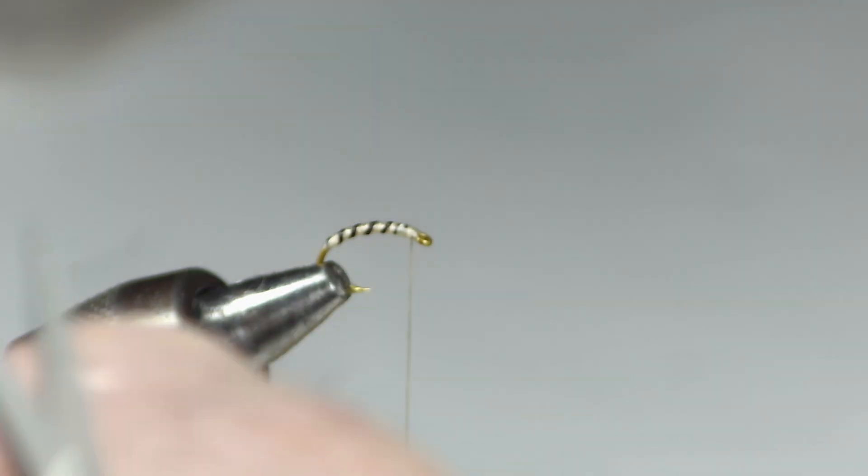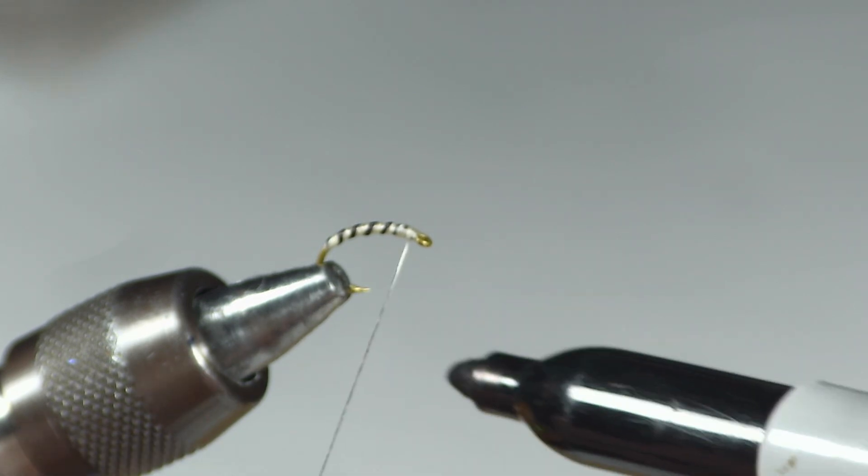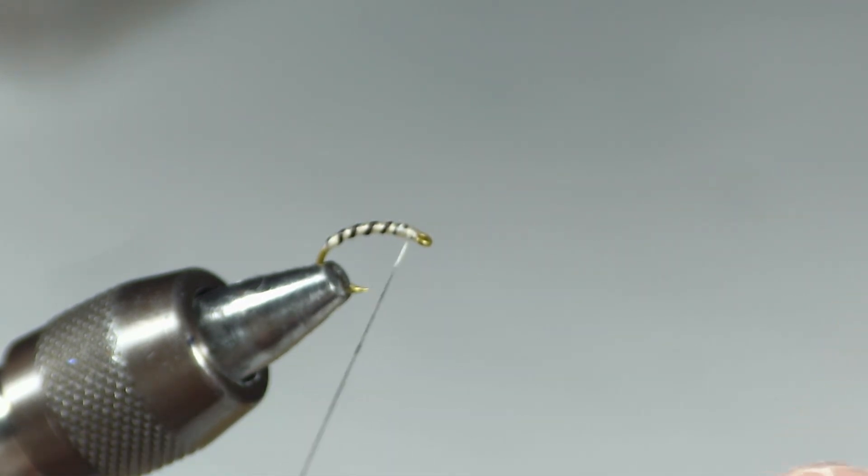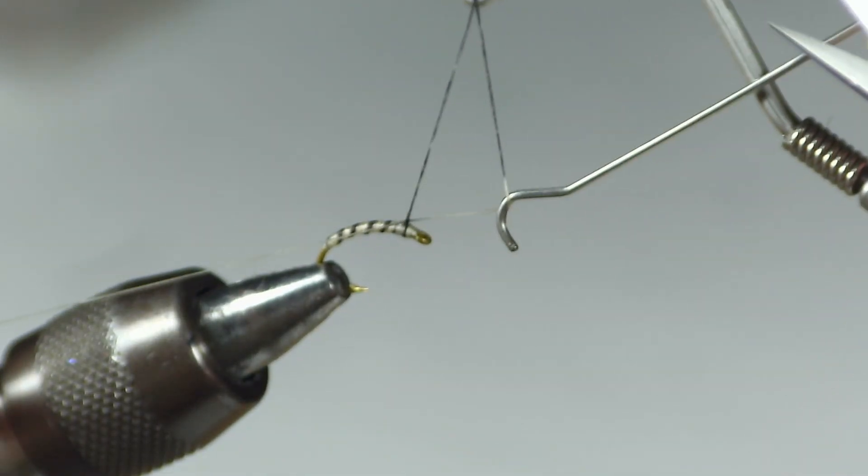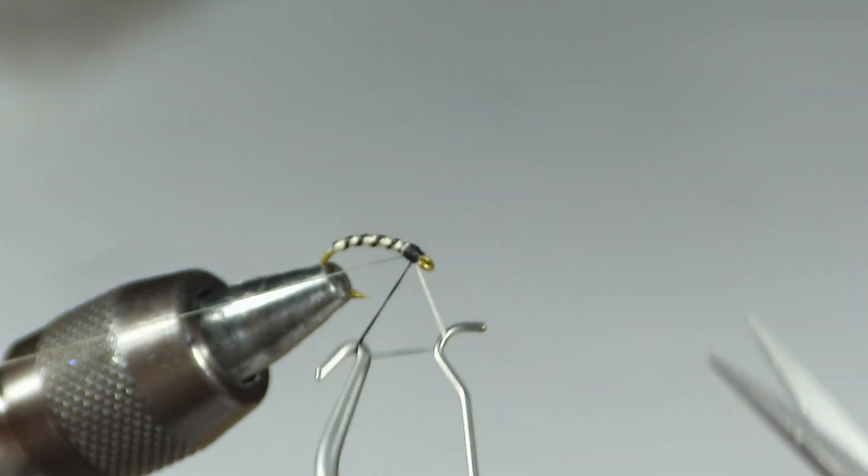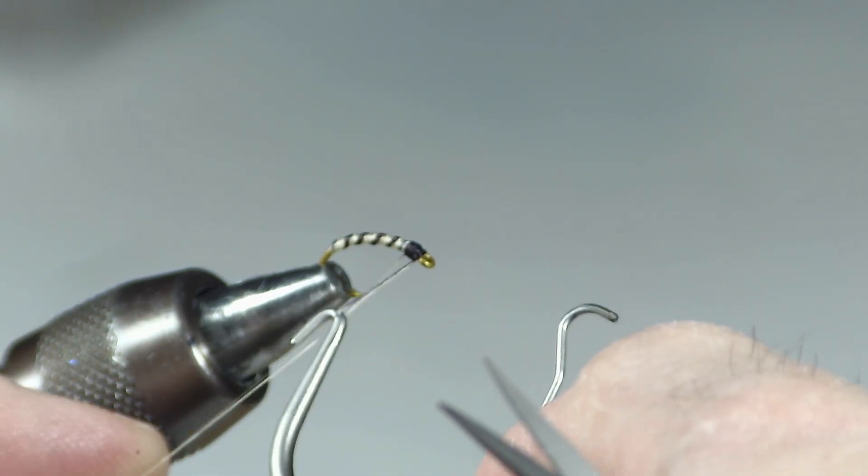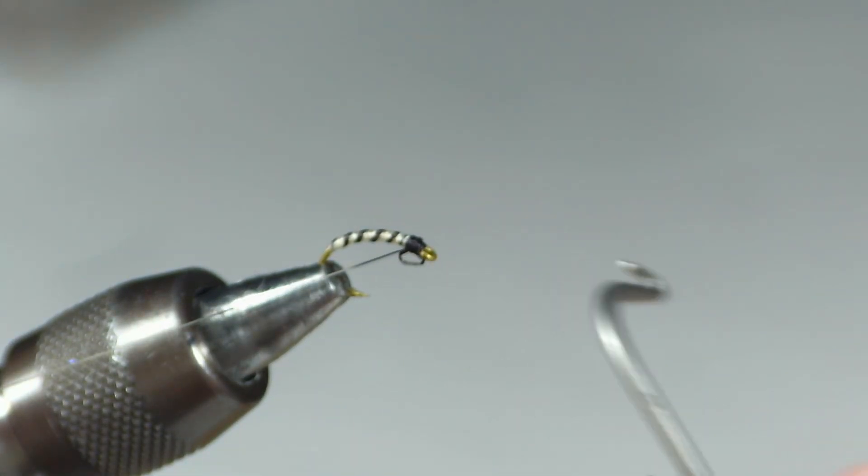Now I want to make a little head. The head on these tends to be darker than the body, so I'm going to do the same thing I did before. I'm going to take the dark marker and make some dark stripes on this. I could take some wraps to make a head, but what I'm going to do is just use the whip finish to make my little head on the front of this. And then we want to trim it.